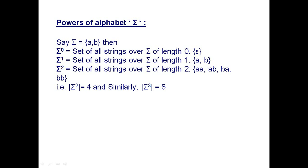Power of an alphabet: for input alphabet {a, b}, sigma^0 means strings of length 0, sigma^1 means length 1, sigma^2 means length 2. The set of all strings of length 0 is {epsilon}. Length 1 gives {a, b}. Length 2 gives {aa, ab, ba, bb}. The cardinality (mod) of sigma^2 is 4 — total 4 strings possible with length 2.